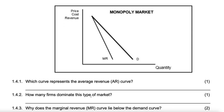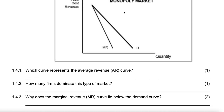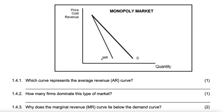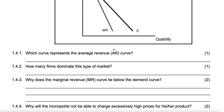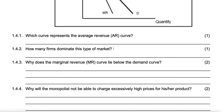How many firms dominate this market structure? There's only one — mono means one. Why does the marginal revenue curve lie below the demand curve? Because each additional unit is sold at a lower price, or each additional unit is not sold at the same price — it is sold at a different price.